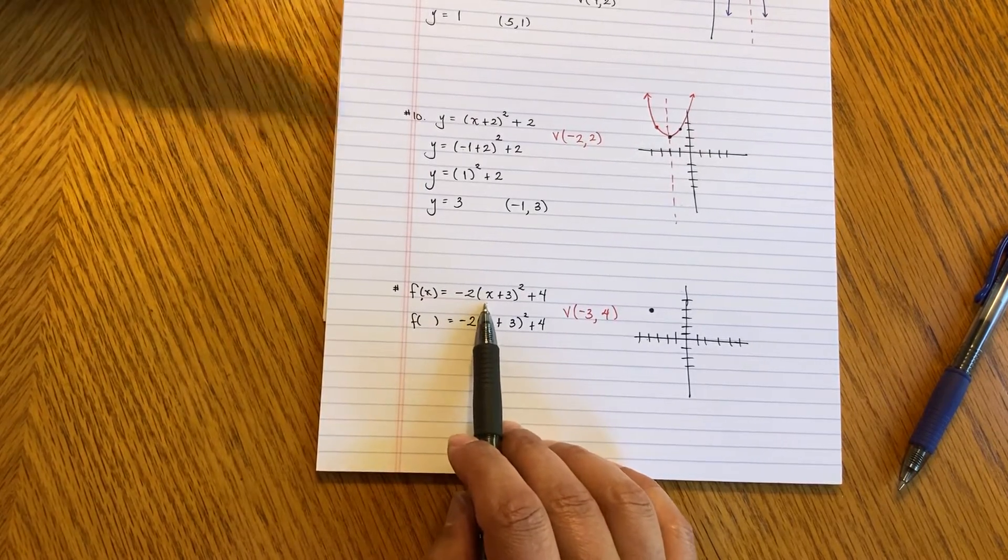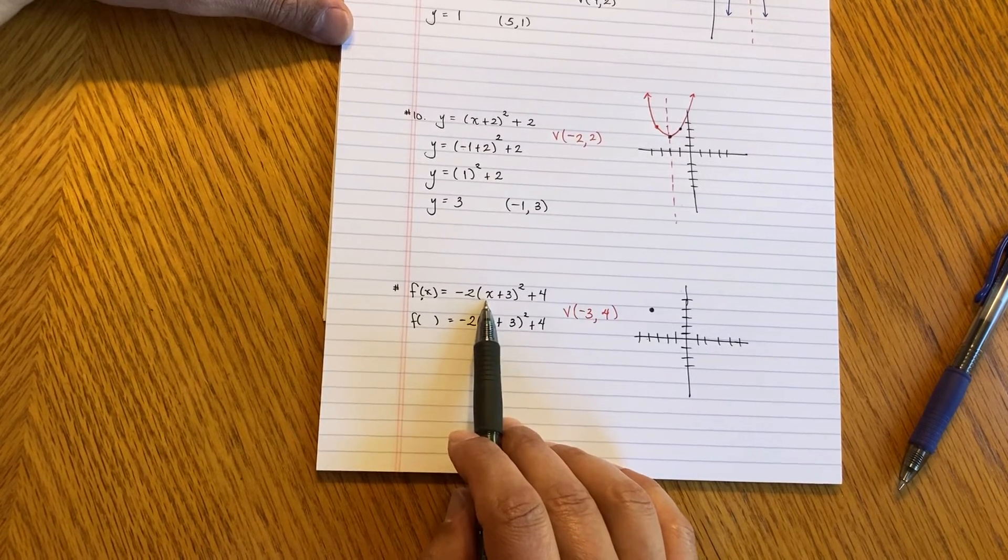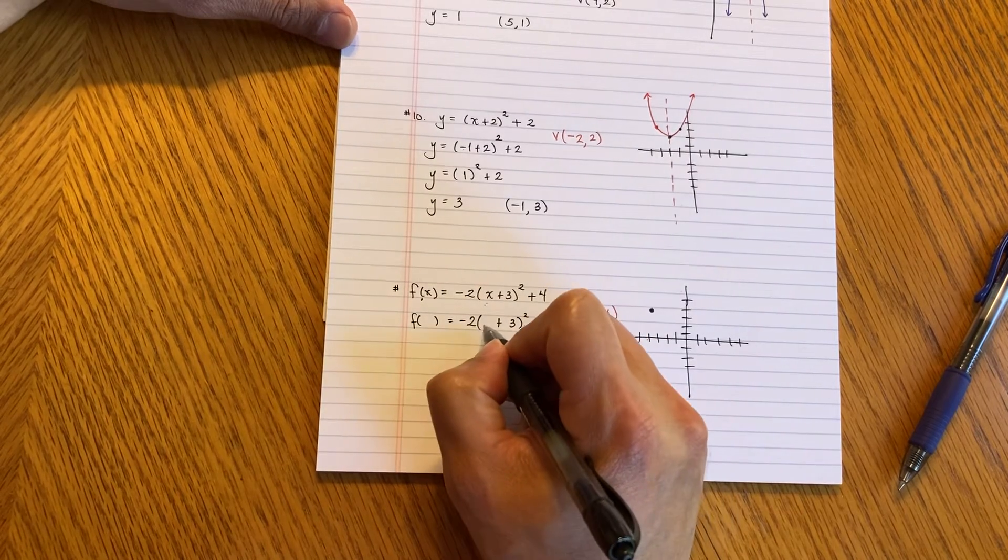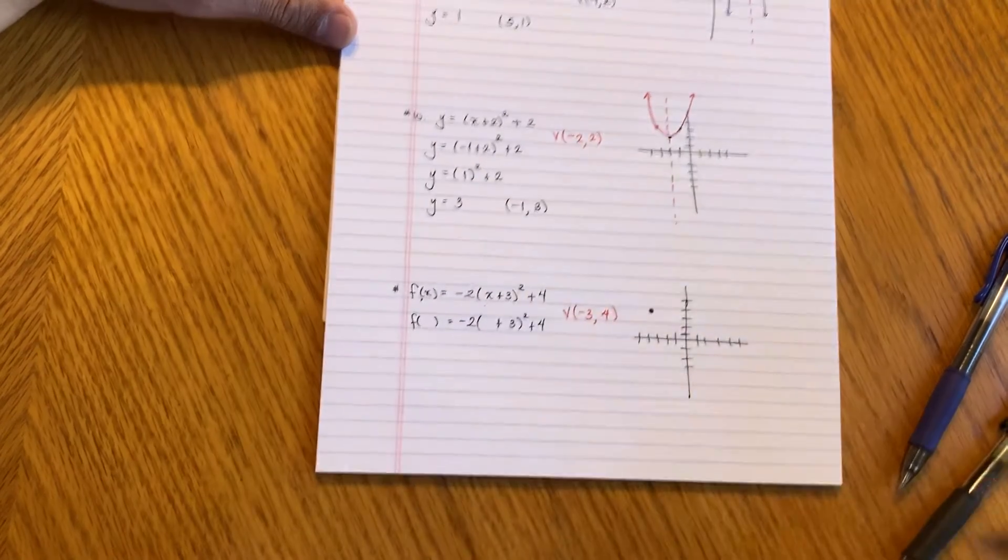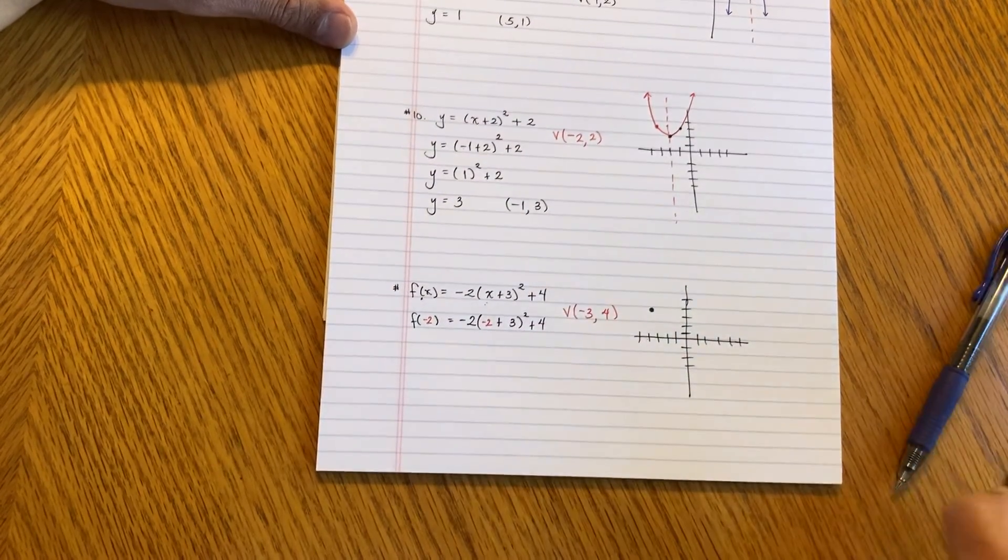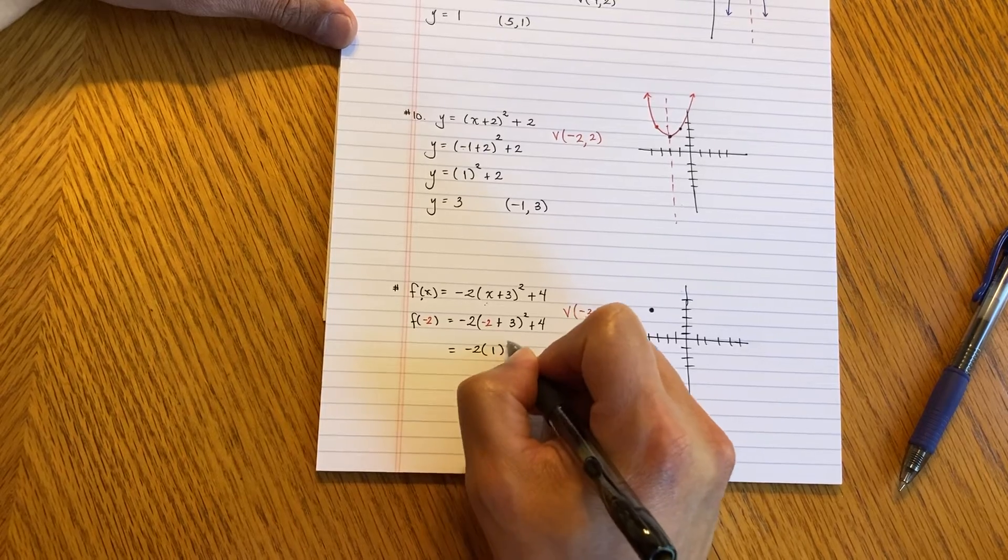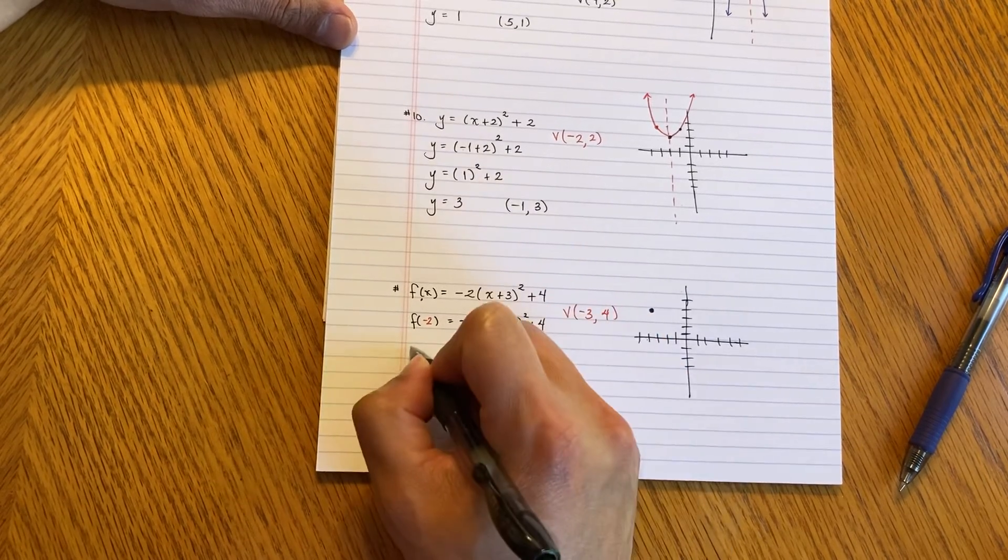Let's see here. What can I do? Maybe a negative 2. If I plug in negative 2, what's going to happen? I'm going to get negative 2 plus 3, which is 1. And I'm going to square it. And this is where you have to be careful.